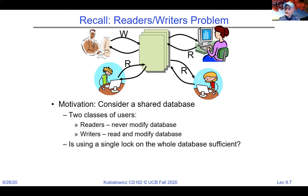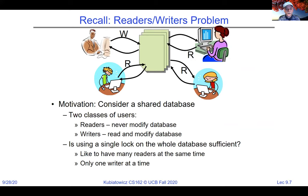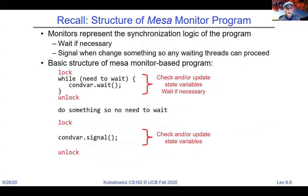Why isn't using a single lock on the database sufficient? Because if we grab a lock before reading, nobody else can get in to read — and we already said we want more than one reader. So we already need something different. We want many readers at the same time but only one writer.